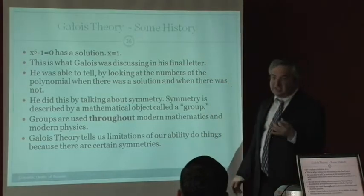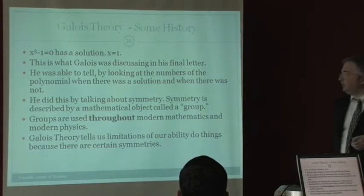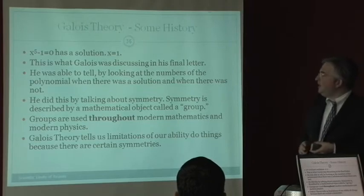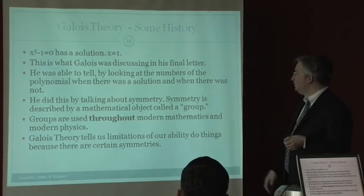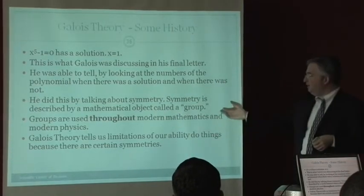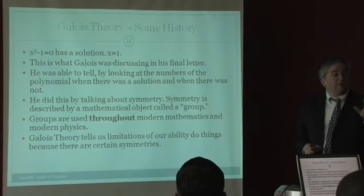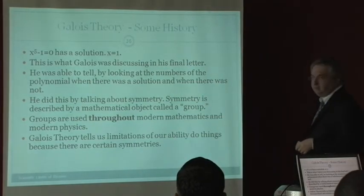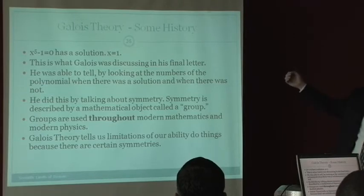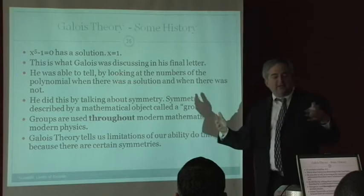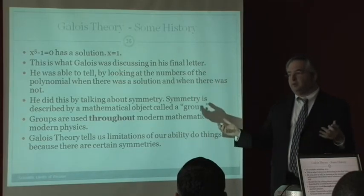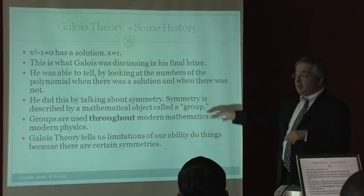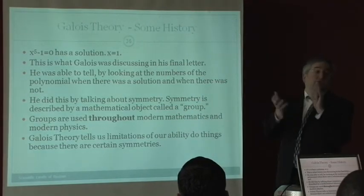Now, Galois, this is what he was discussing. He was working on this for a couple of years before, and not too much, because he was a little kid. But he was able to tell by looking at the numbers of the polynomial, when there was a solution and when there was not. And he did this by talking about the symmetries of the equation and the symmetries of the solution. And he's described by a mathematical object called the group. And that letter was the first time that the word group was found. So, that letter.